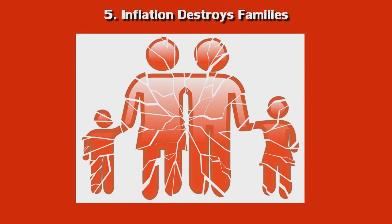5. Inflation destroys families. No one has formulated this better than the economist and philosopher Hans-Hermann Hoppe in Democracy: The God that Failed, writing: "Every form of government welfare — the compulsory wealth or income transfer from haves to have-nots — lowers the value of a person's membership in an extended family household system as a social system of mutual cooperation and help and assistance. Marriage loses value. For parents, the value and importance of a good upbringing and education of their own children is reduced. Correspondingly, for children, less value will be attached and less respect paid to their own parents."